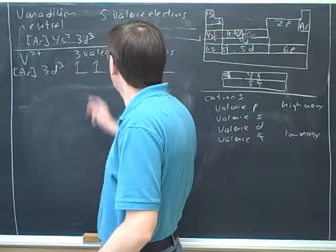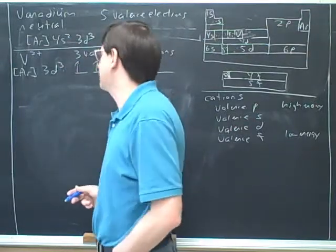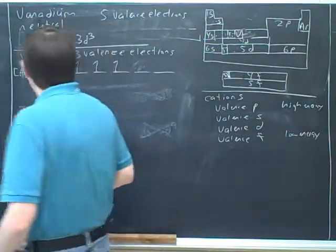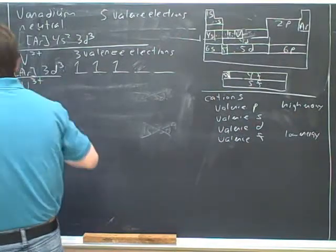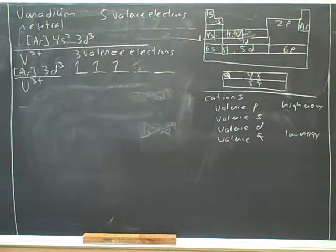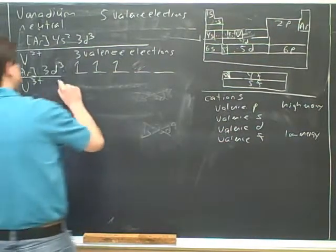That was the digression going through neutral elements. Let's go back to here where we have vanadium 2 plus. These cations will pretty much never have s electrons. Now let's draw the electron configuration for vanadium 3 plus. How many valence electrons does vanadium 3 plus have? Two.